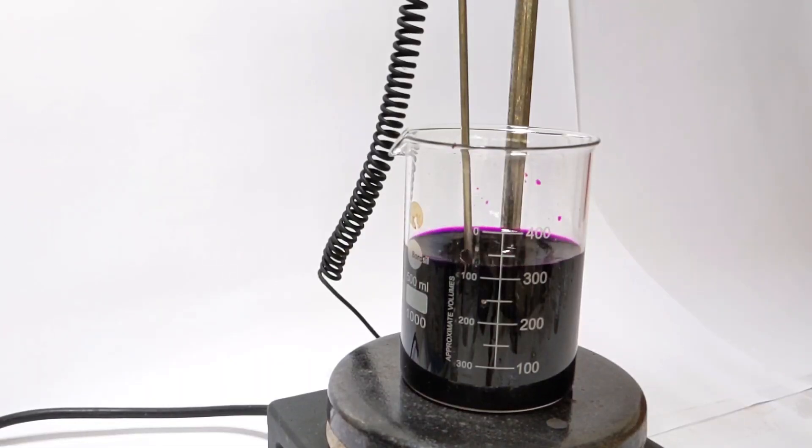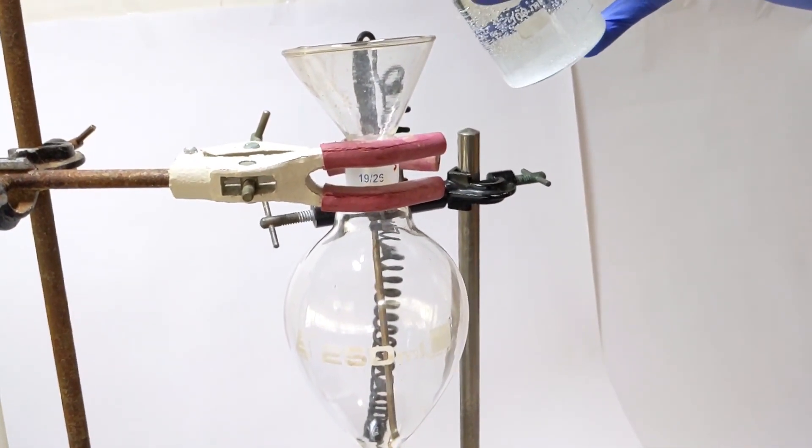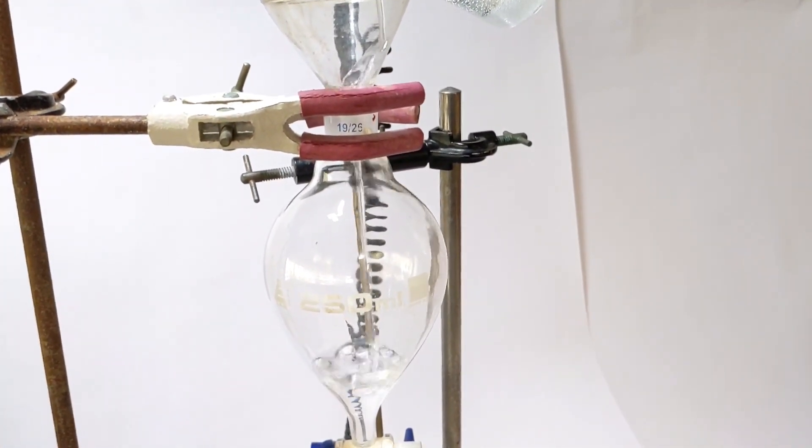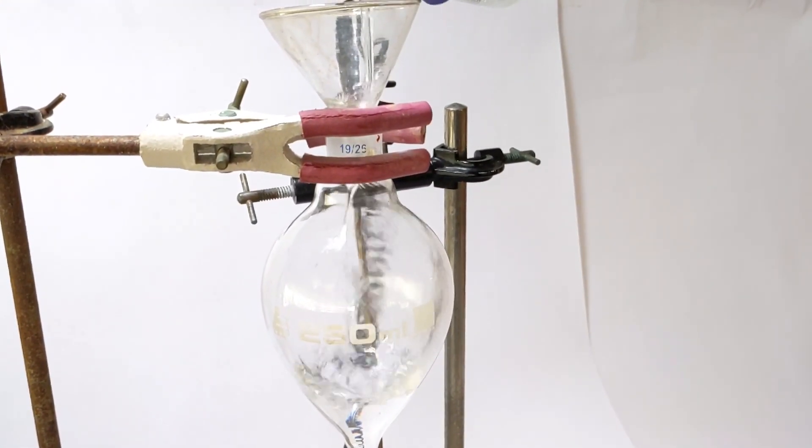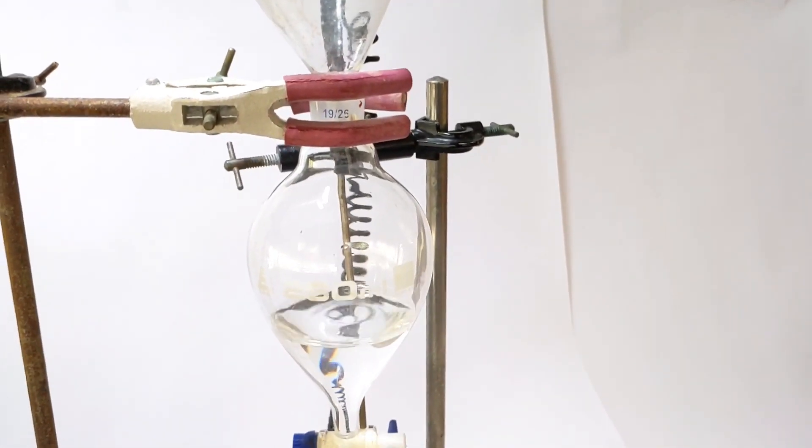Some 3% hydrogen peroxide solution was taken in a separatory funnel. I took about 50 milliliters. The separatory funnel was then clamped and fixed just on top of the beaker and hydrogen peroxide was allowed to fall dropwise to the solution.